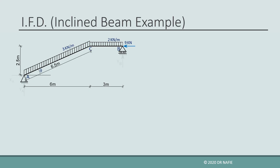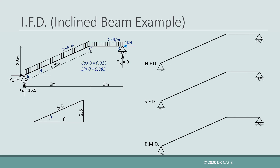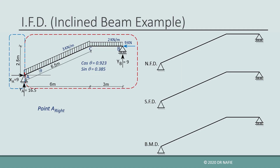Now let us return to our example. First, we will evaluate the reactions. Then we will calculate the cosine and sine of the angle theta. Then we will proceed to construct the internal force diagrams. As detailed in a previous lecture, this is done by evaluating the internal forces at key critical points, then connecting between the points to finalize the diagrams. We start from the left by working on the point just to the right of point A, dividing the beam into two parts at that point and using one of the parts to calculate the internal forces.